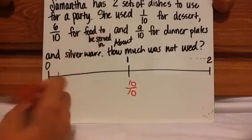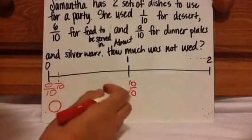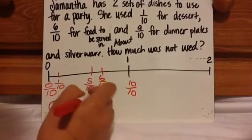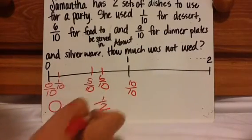6/10 for food to be served in. Again, this is 0/10, this is 10/10, halfway would be 5/10. 6/10 is right around here, so it's like she used about half.